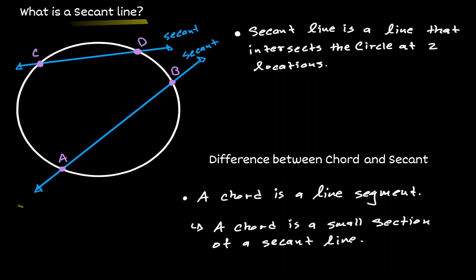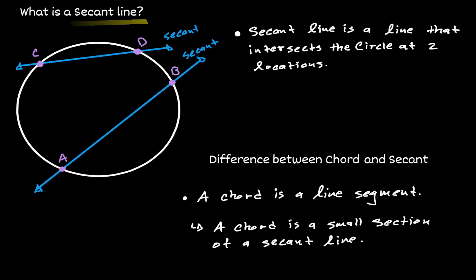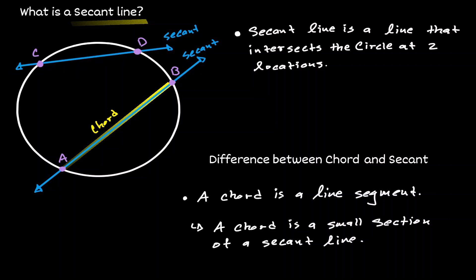We can also say that the chord is just a small section of a secant line. So if we consider the secant line AB and measure the distance from A to B, then we can consider this line as a chord. The same idea applies to the other secant line — if we consider the whole line, we call that a secant, but if we just consider the lengths between those intersections, that's what we call a chord.